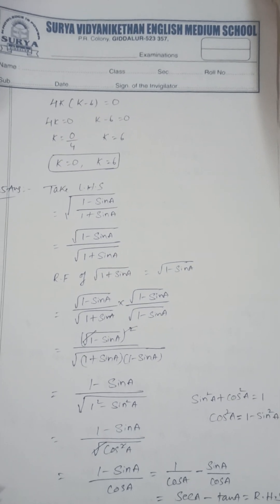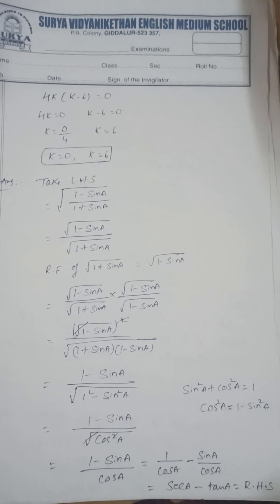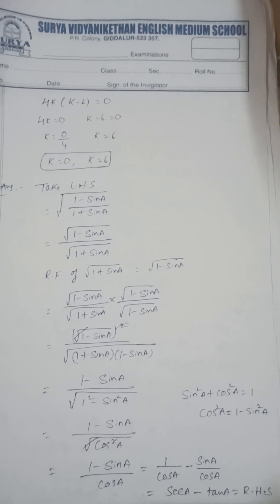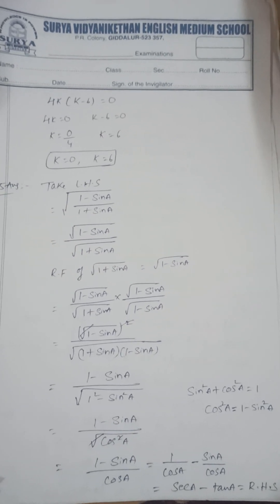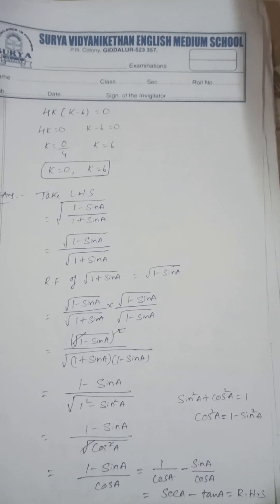Next, prove that square root of 1 minus sin A by 1 plus sin A is equal to secant A minus tan A. You can find by using rationalizing factors and also you can use the trigonometric identities.